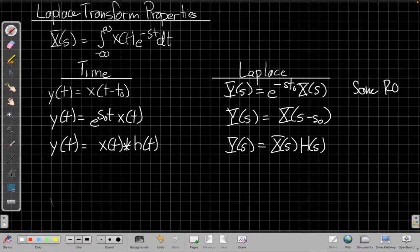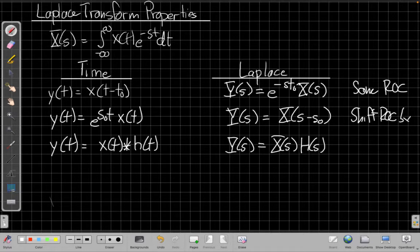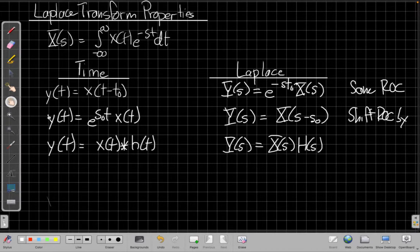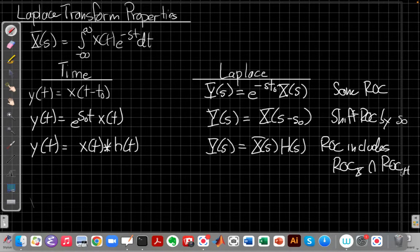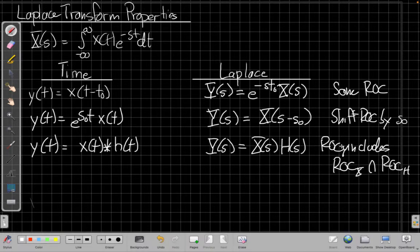the first property has the same ROC. The second one, if I shift s, I'm also going to shift the ROC by s-naught. The bottom one, we're going to actually have the new ROC includes the intersection of the first two ROCs. So I take the ROC of x, intersect or overlap it with the ROC of h, and figure out what's the smallest ROC for y that includes that intersection. Again, where this upside down cup shape means intersect.